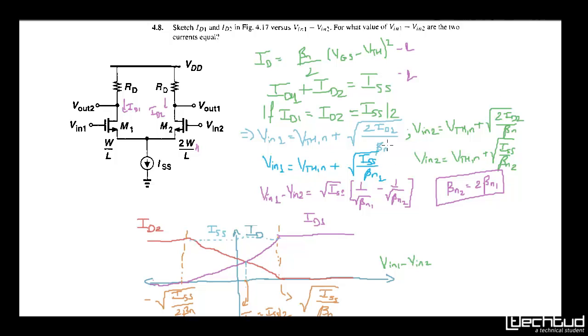Now id1 and id2 are equal that is ISS by 2. So when we substitute here we will get this term. But β1 and β2 are different. So when we put vin1 minus vin2, we will get is under root ISS. Vthn will cancel of both the transistors. We are assuming that threshold voltage of both the transistors are same. We will get 1 by under root βn1 minus 1 by under root of βn2.